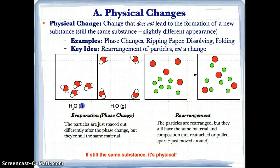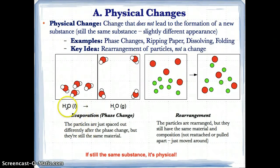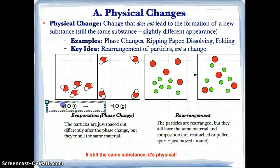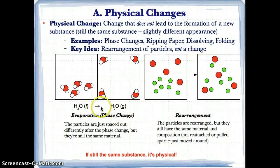If it's still the same substance, it's physical. For instance, H₂O liquid becoming H₂O gas is a physical change because both are the same substance — they're just different phases. So if the left and right sides of a change are the same substance, such as H₂O and H₂O, it's a physical change because you're only changing the phase, not the composition.